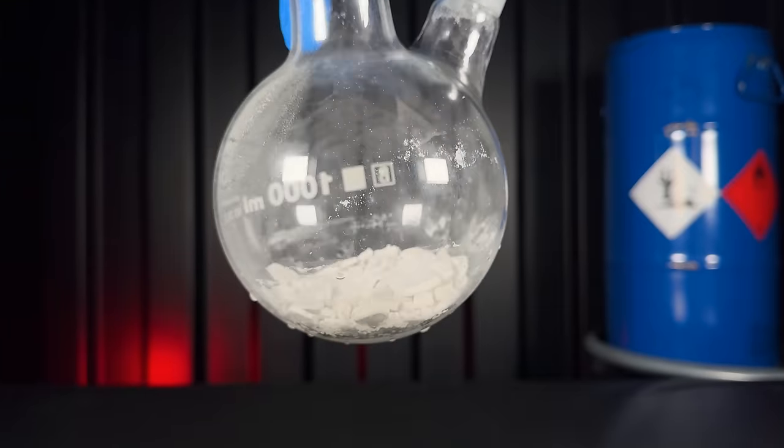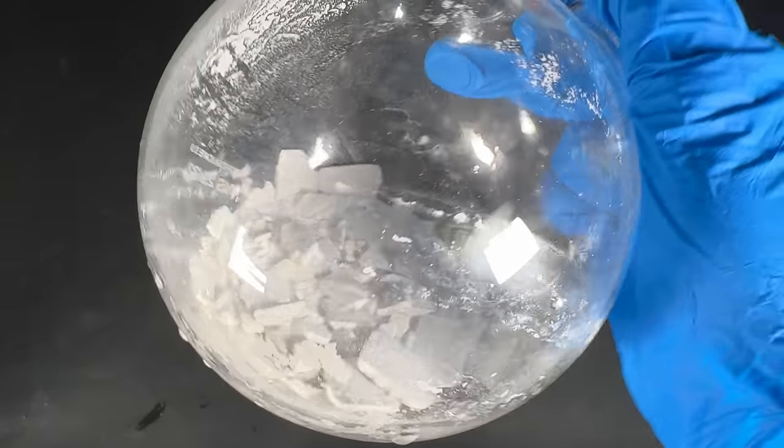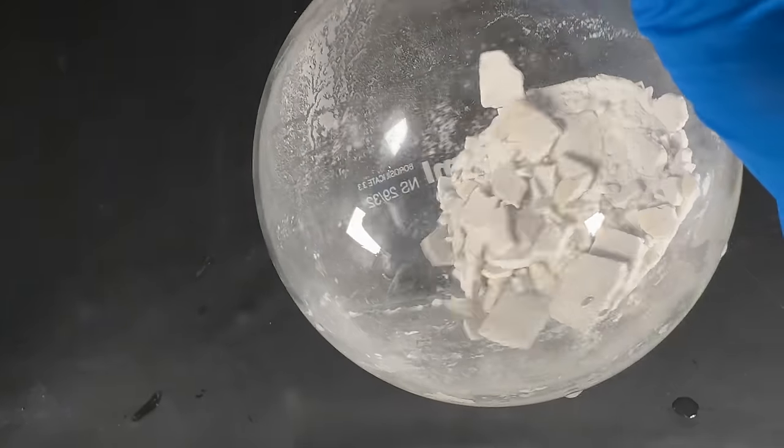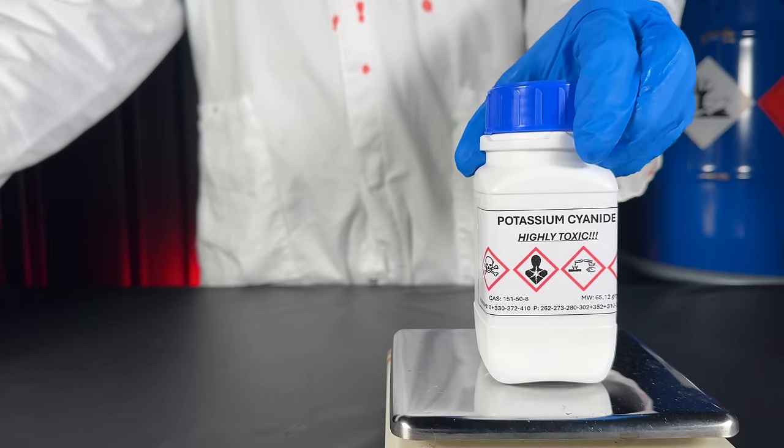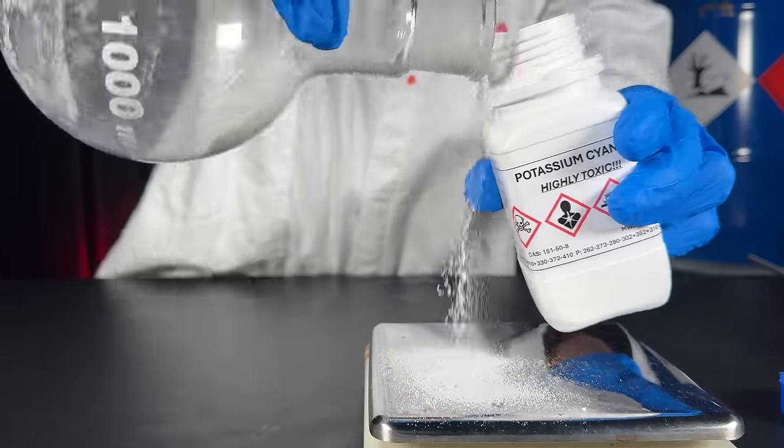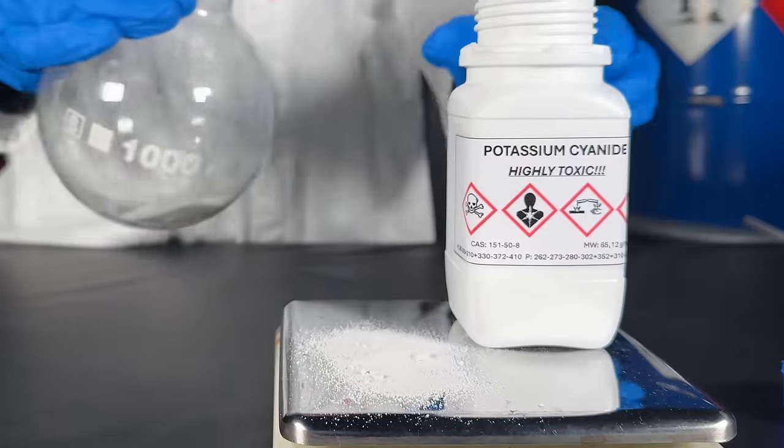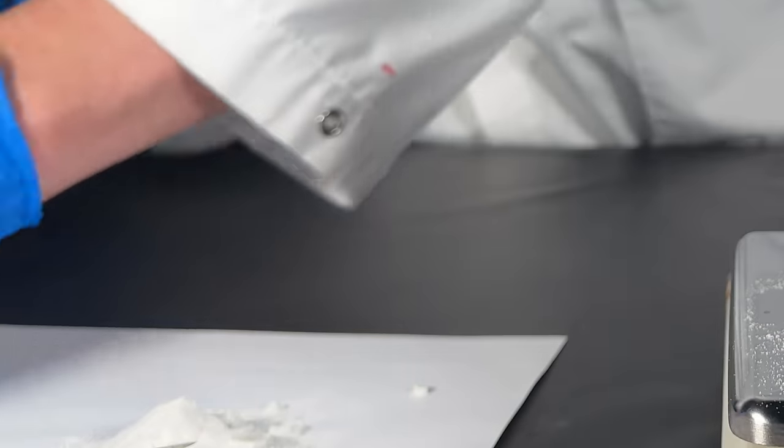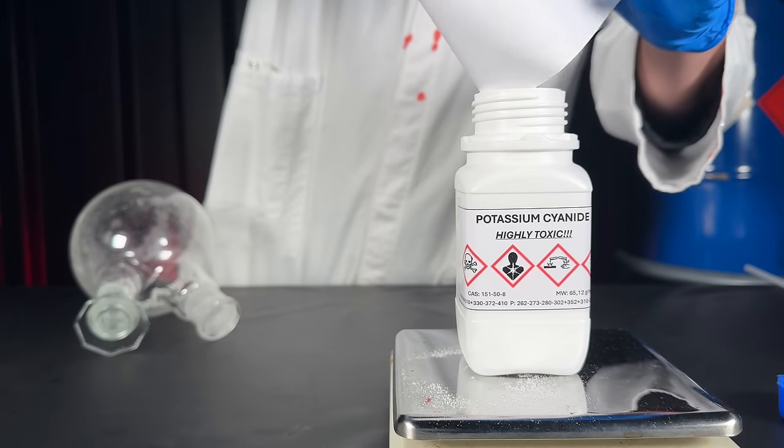And there you have it: white and dry, highly toxic potassium cyanide. To determine the yields, I put it into a pre-weighed storage bottle, and unfortunately this happens. After carefully cleaning up the powdered dust, I put the rest into the bottle.